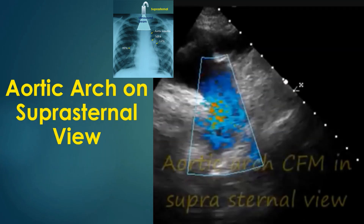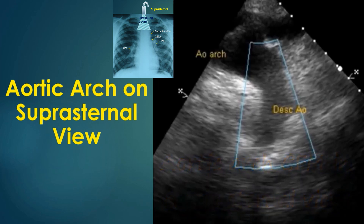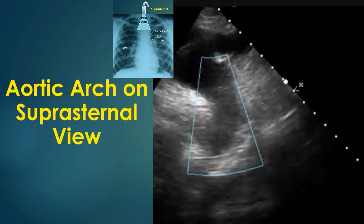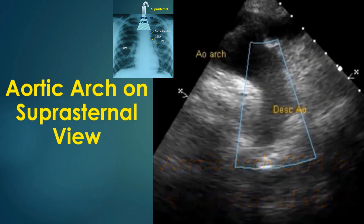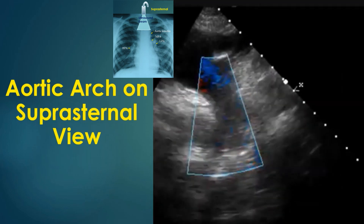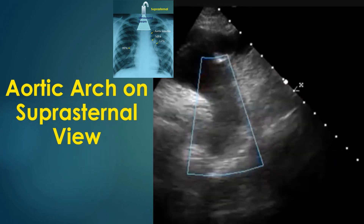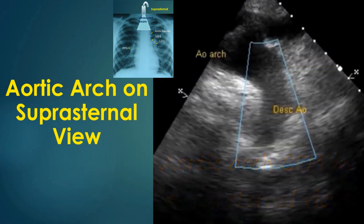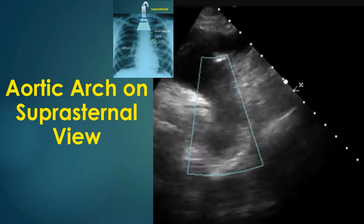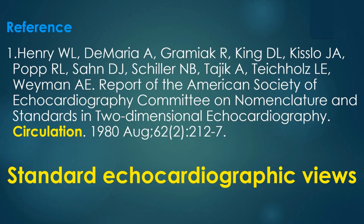Suprasternal view is often the last view obtained during echocardiography. It images the aortic arch and its branches and the proximal descending aorta. This view is used to detect coarctation of the aorta and measure gradients across the coarctation. Ascending aorta can be imaged with a tilt, and ascending aortic flow is measured in aortic stenosis. This is sometimes useful when the gradient is not picked up well in the apical five-chamber view. A citation for a good article with line drawings illustrating various echocardiographic views is available as free full text online.